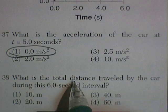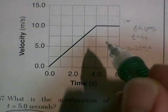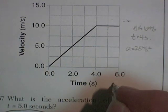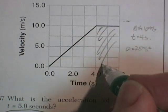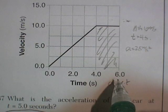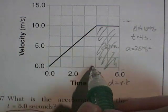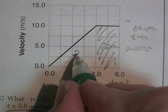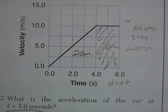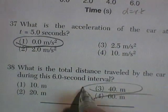Question 38: What's the total distance traveled during the entire 6 seconds? Distance is velocity times time, which is the area under the graph. Traveling at 10 meters per second for 2 seconds gives 20 meters. Then from 0 to 10, it's the triangular area: half base times height, so half of 10 times 4 equals 20 meters. Total distance traveled is 40 meters. 40 meters is correct.